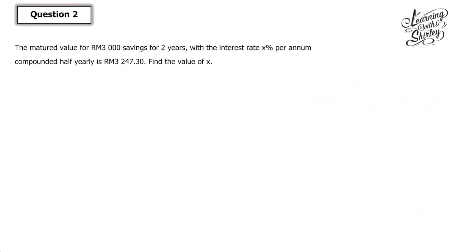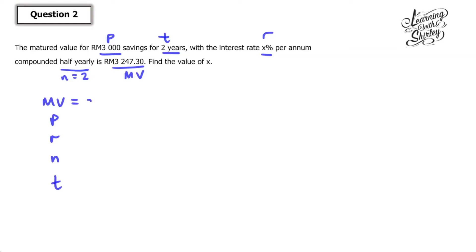Let's look at question number 2. The matured value for RM3,000 savings for 2 years, with interest rate x% per annum, compounded half yearly, is RM3,247.30. Find the value of x. The information given: P is 3,000, T is 2 years, the interest rate is unknown (leave it as R), compounded half yearly means N equals 2, and the matured value is 3,247.30. So: MV is 3,247.30, P is 3,000, R is unknown, N is 2, and T is 2 years.